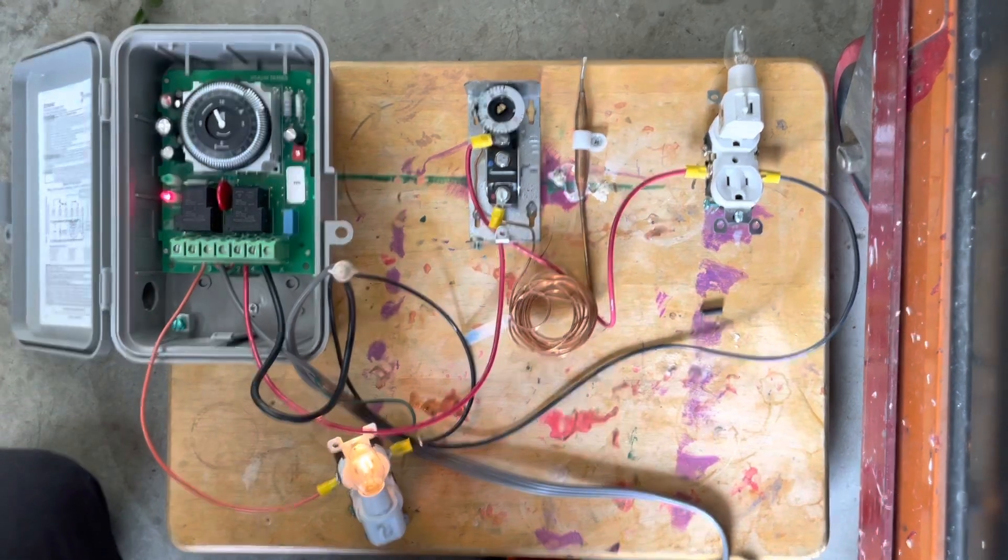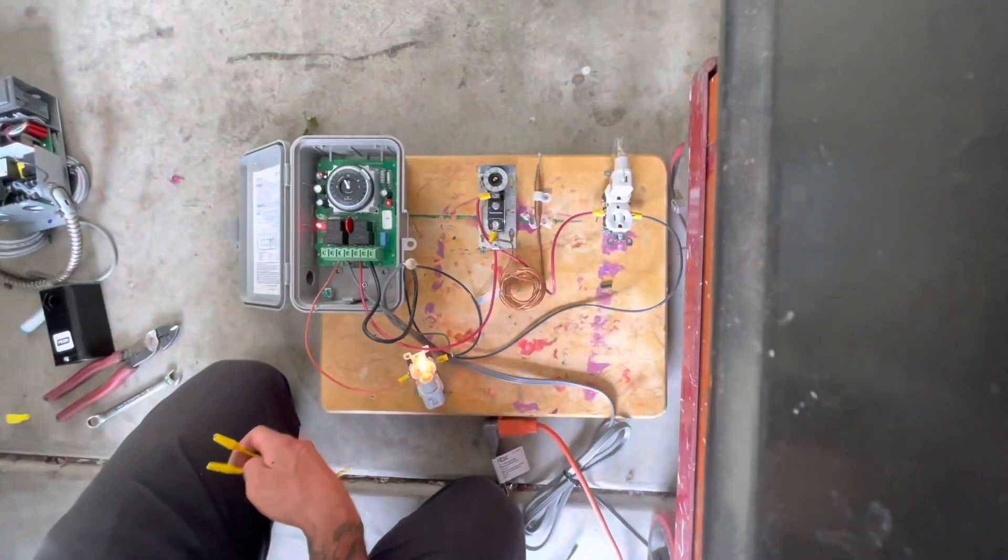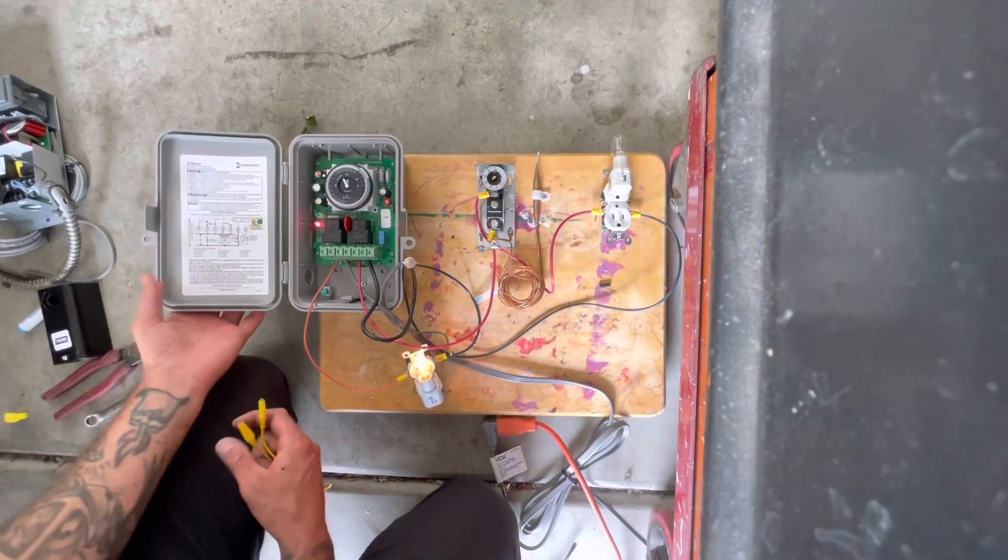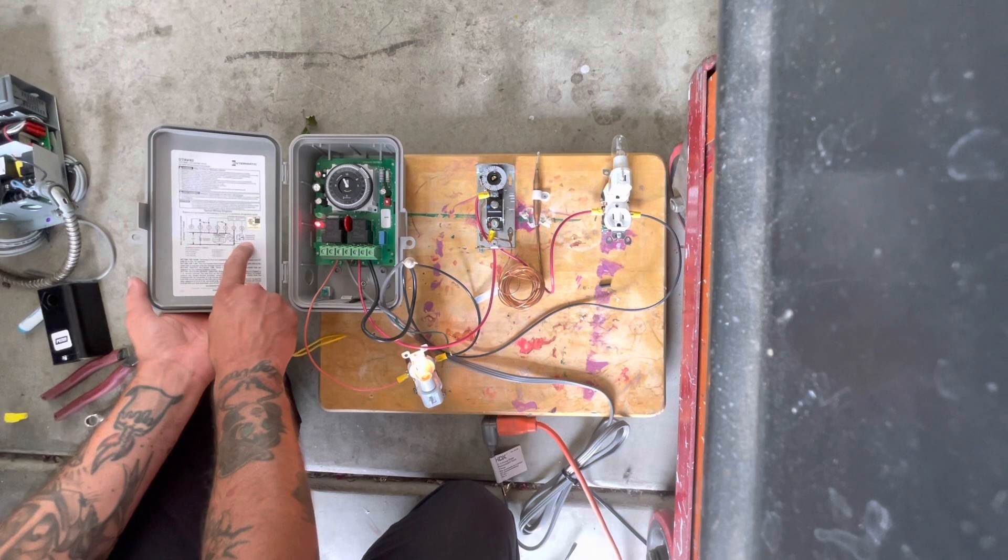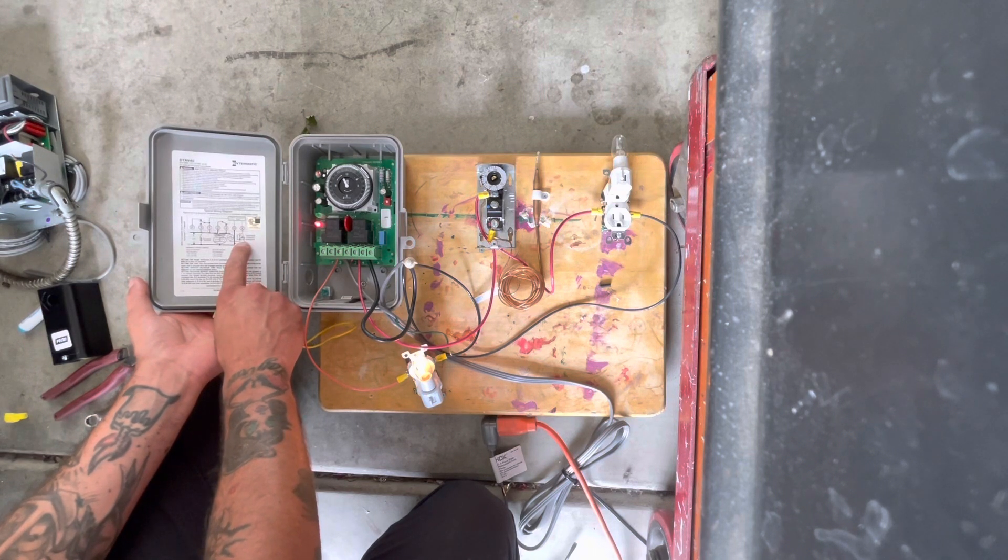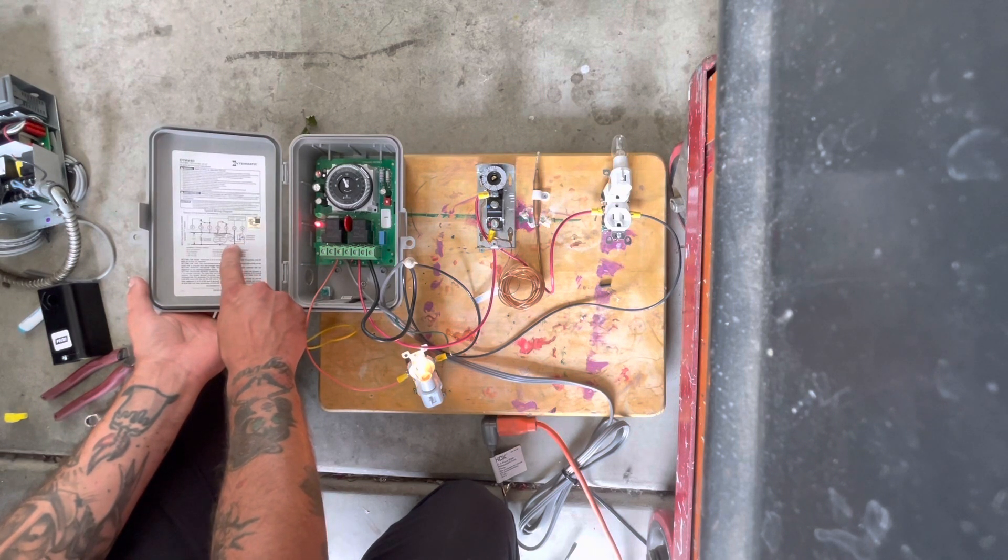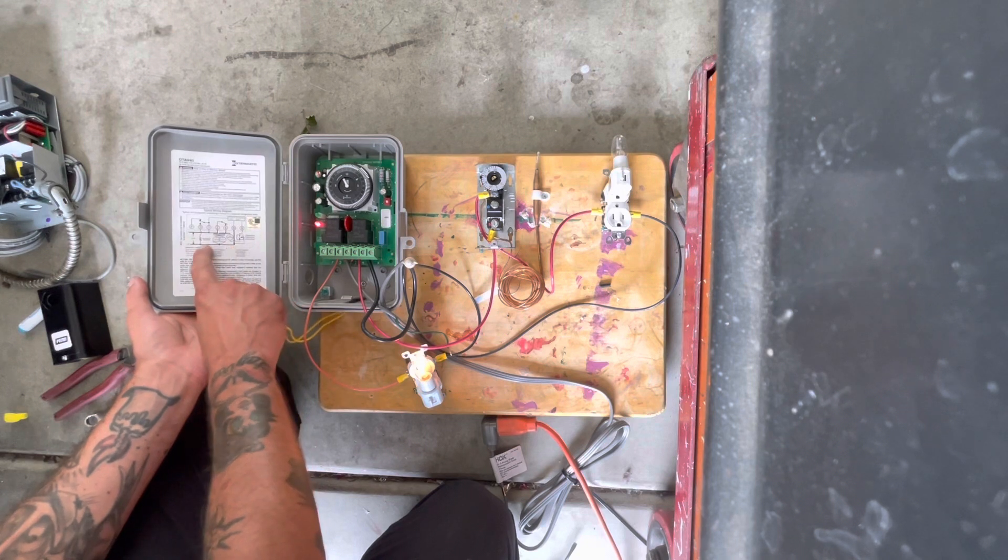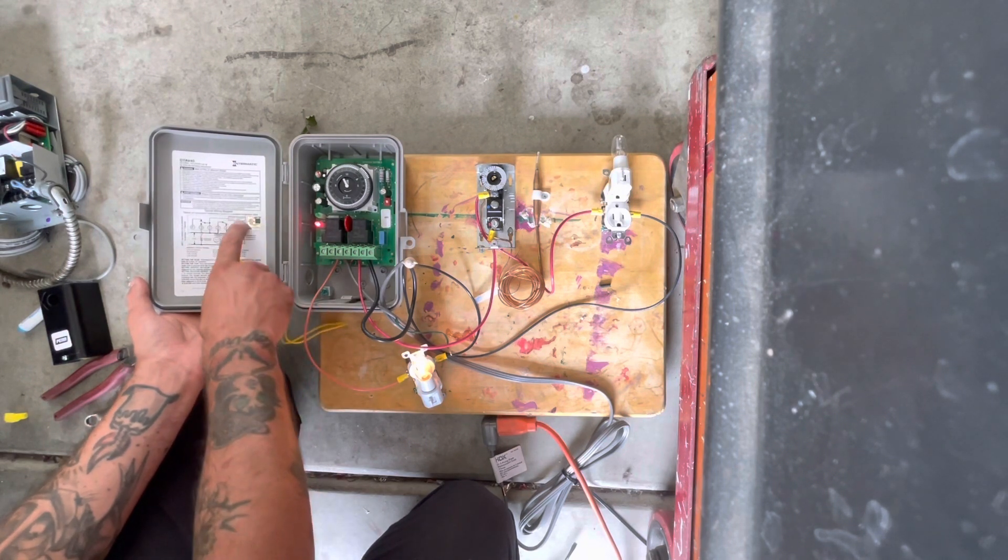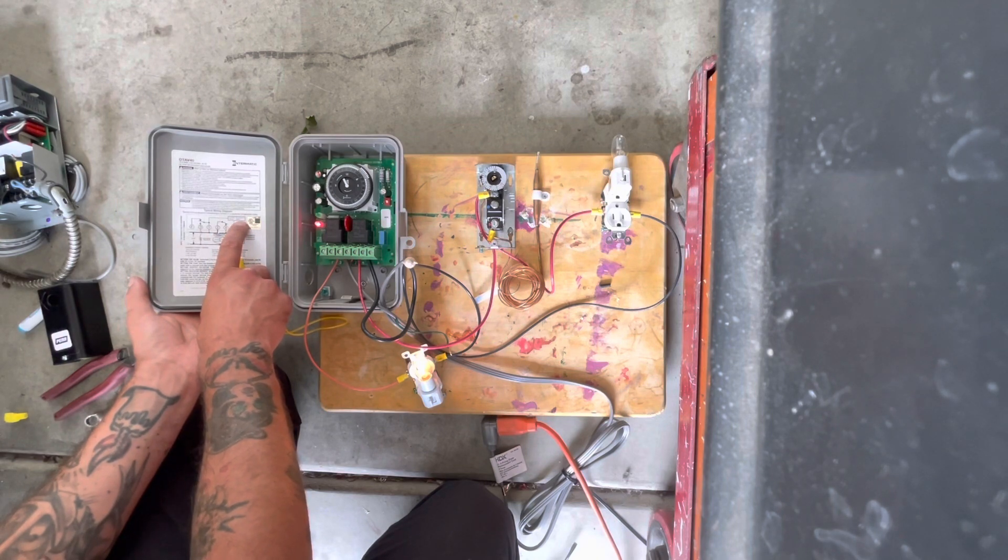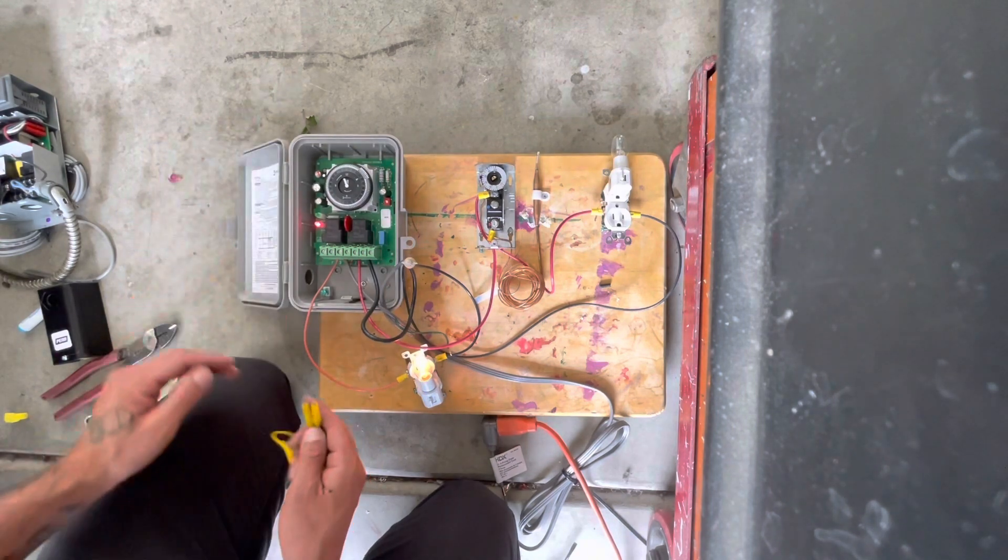All that's happening is, so on these Intermatics, the thermostat relay is just gonna switch the common power from the heater and it's gonna switch it over to X, which is gonna terminate the power. So I'll show you.